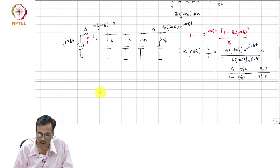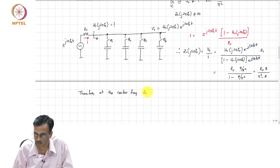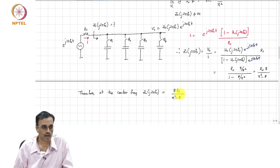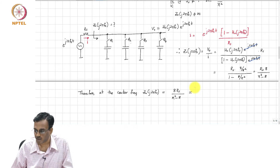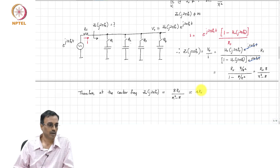The exponential terms cancel. This gives R_s times 8/π² divided by (1 minus 8/π²), which equals R_s times 8 divided by (π² minus 8). At the center frequency, the looking-in impedance of this switch-capacitor resonator is 8R_s / (π² − 8), which is approximately — since π² ≈ 10, and 10 minus 8 is 2 — roughly 4R_s.